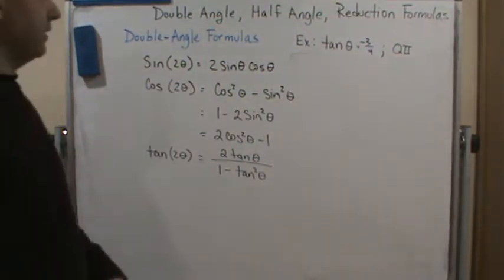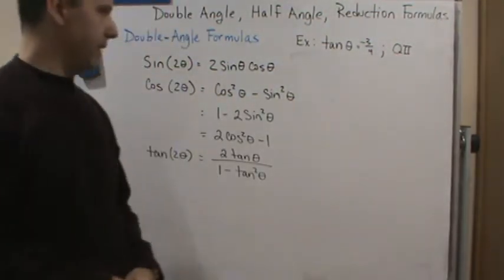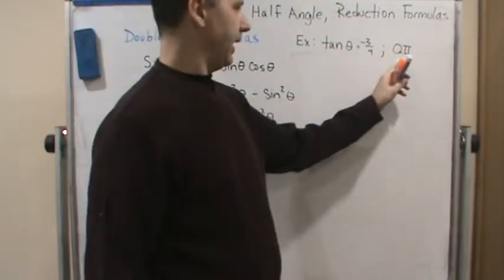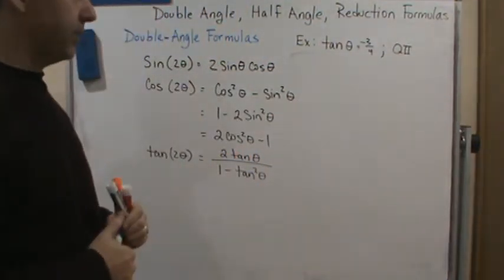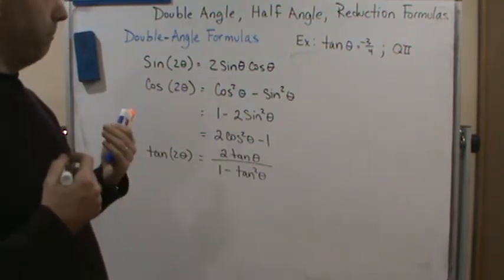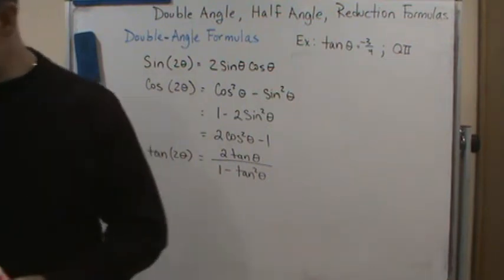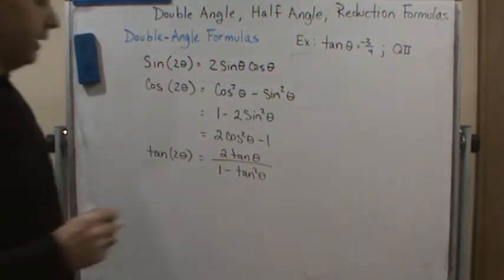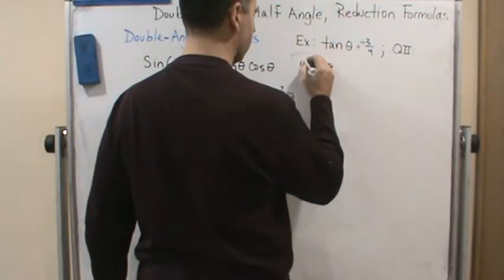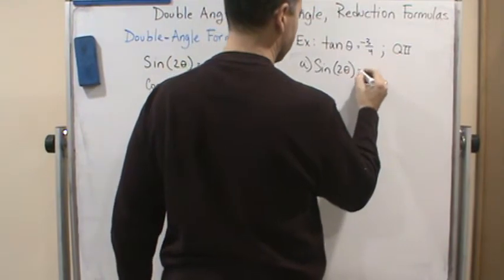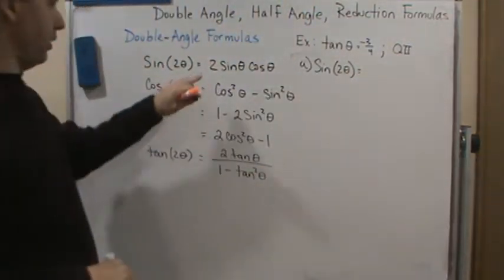So here is the first example we'll do: tangent theta equals negative three-fourths, and it's in quadrant two. So the angle is in quadrant two. We are going to answer some questions. The first thing is we want to find sine of two theta. Okay, and so we're just going to use the formula.